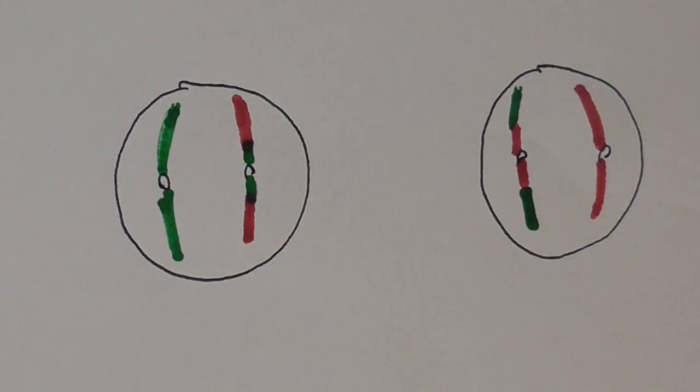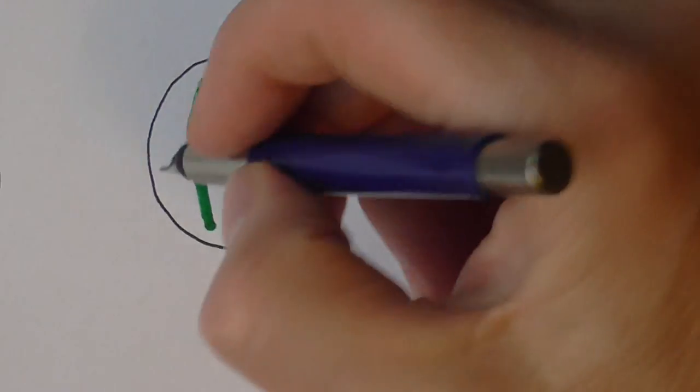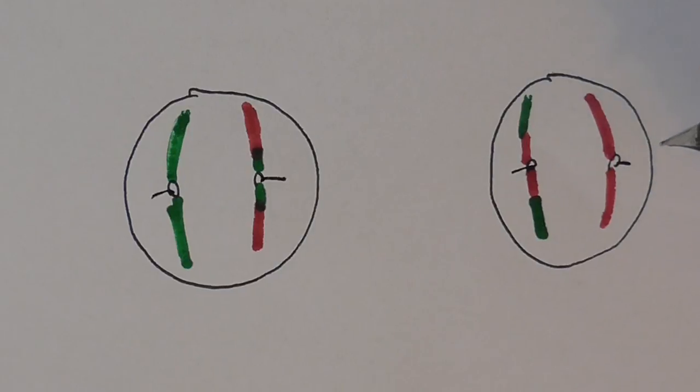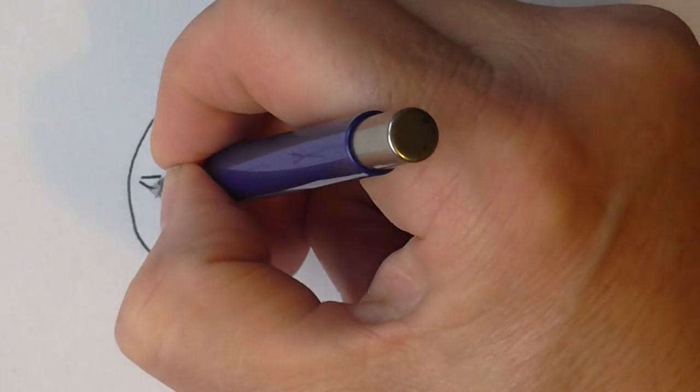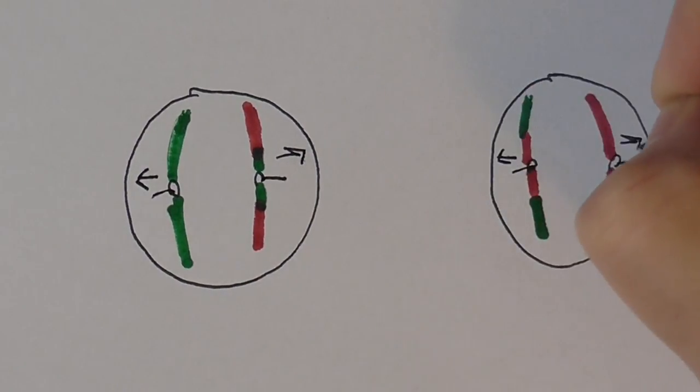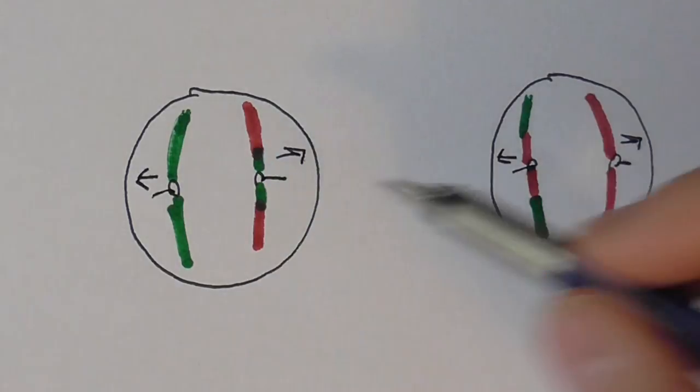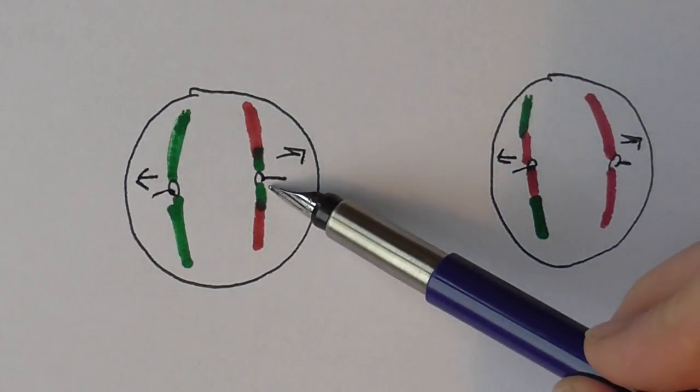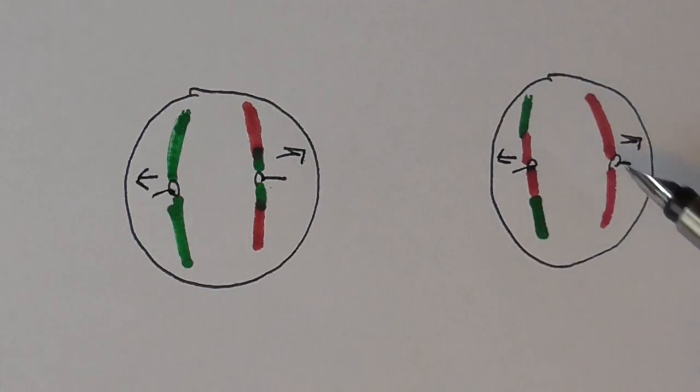So the tetrads now pull apart. They're pulled apart by these meiotic spindles, moving them in this direction. They're finally pulled apart, becoming chromosomes in their own right. So we're going to end up with 23 chromosomes in this half and 23 chromosomes in this half. 23 in this half, 23 in this half, 23 in this half, and 23 in this half.